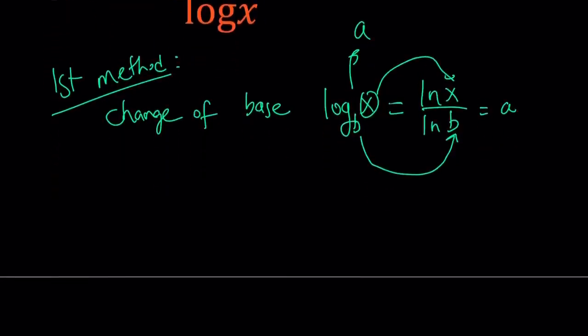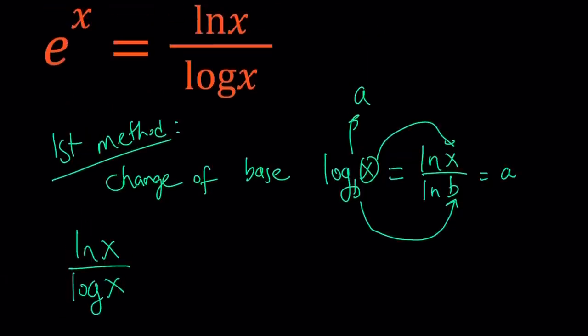Now, we have ln x over log x. And this should kind of call for change of base because I have the ratio of two logarithms. They have different bases, but their arguments are the same. What does argument mean? Well, the argument is x. Okay, great. So, they are different logs. So, how do I use change of base?